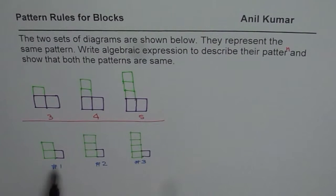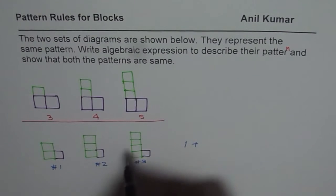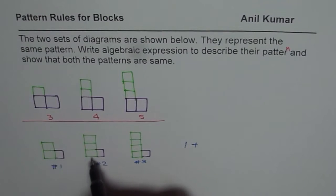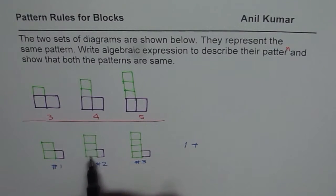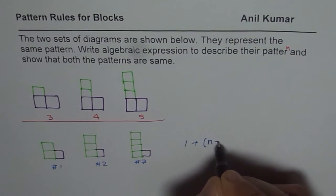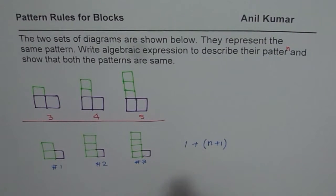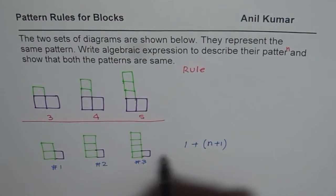If I look at the bottom pattern, one quantity is fixed. I could write a rule saying one — that is fixed. What changes is two, three, and four. How is that change related to the figure number? Pattern number one gives two, pattern number two gives three — so it is basically n plus one. For figure three we have four, which is one more than the figure number. So I could write this as one plus open-bracket n plus one close-bracket. That is the rule for this pattern.